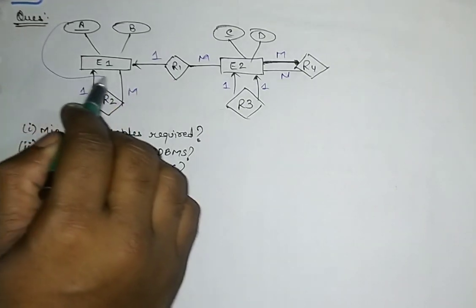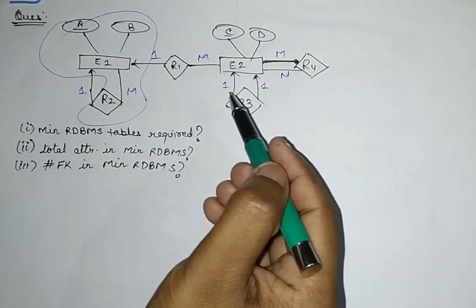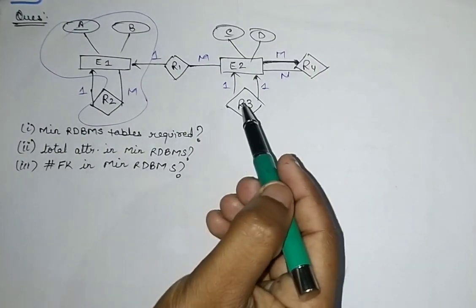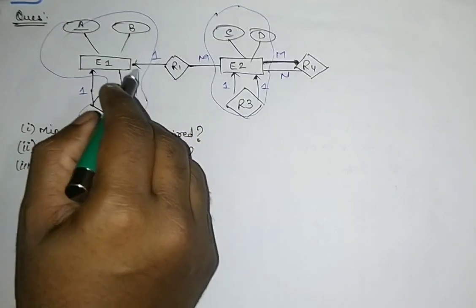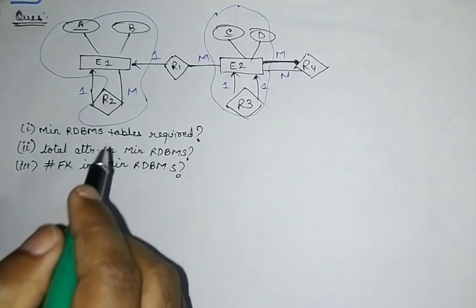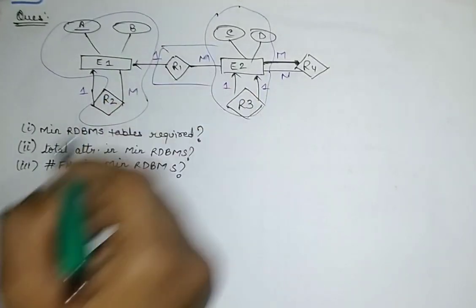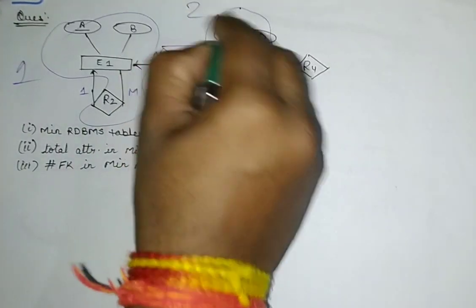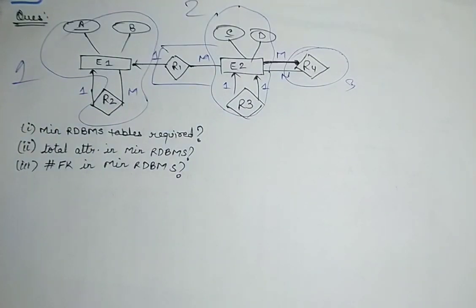For one-to-many, it can be merged from the many side — those form one table. R3 is one-to-one, so it can be mapped into one table from either side. Another one-to-many relationship between two entities can also be merged with the many side — forming one combined table. The many-to-many relationship must be managed as a separate table since it cannot be merged. So the minimum number of tables required is three.